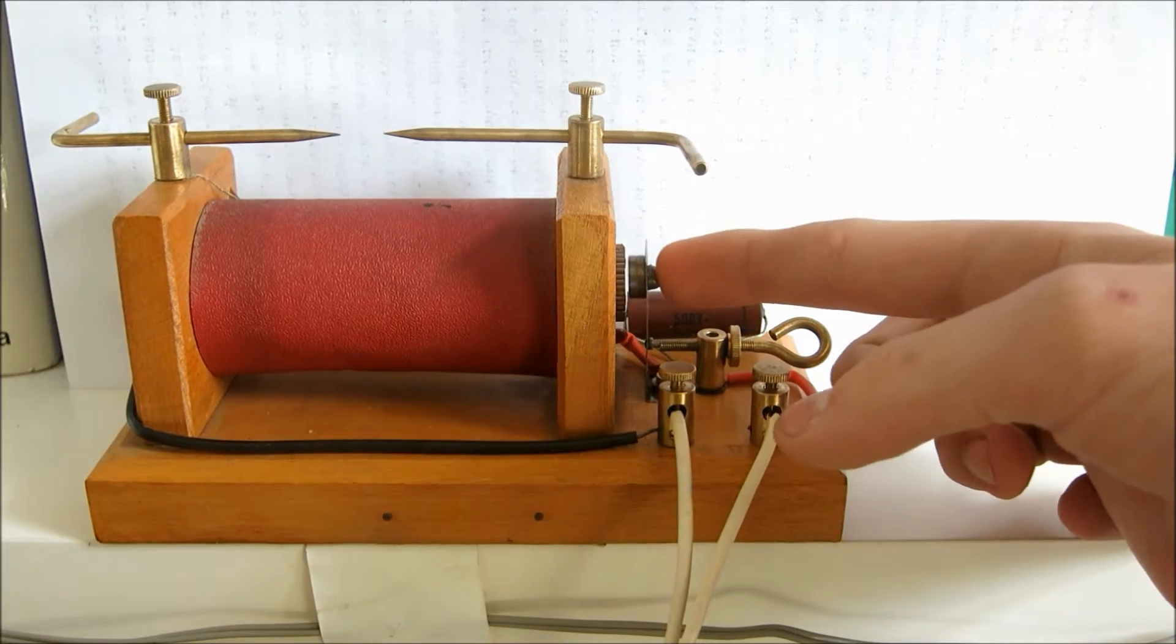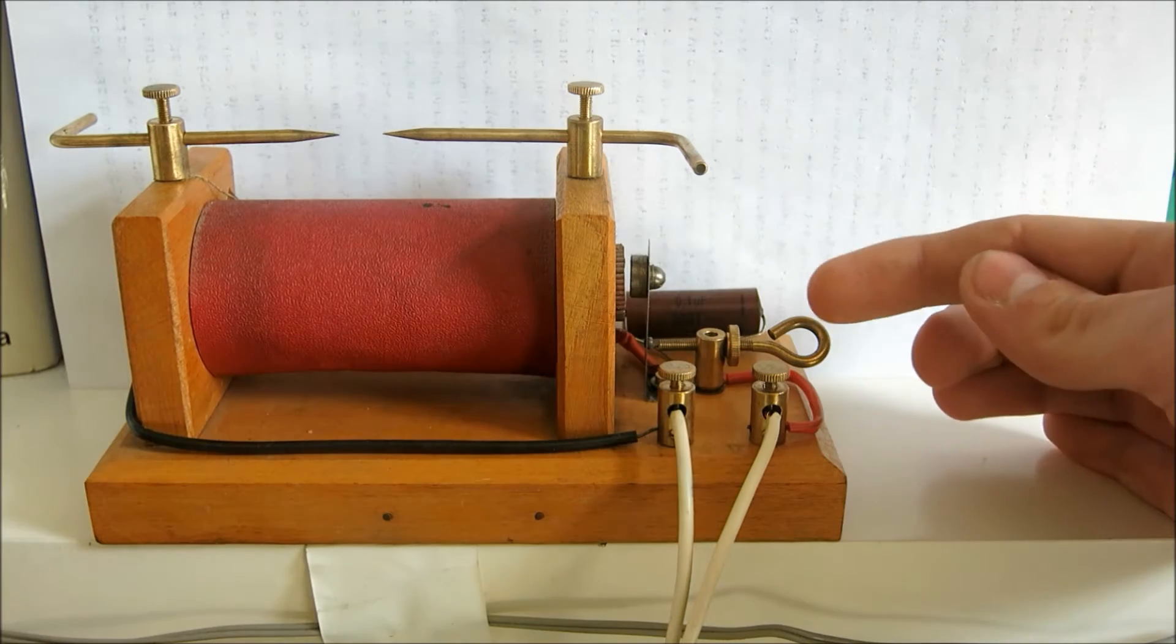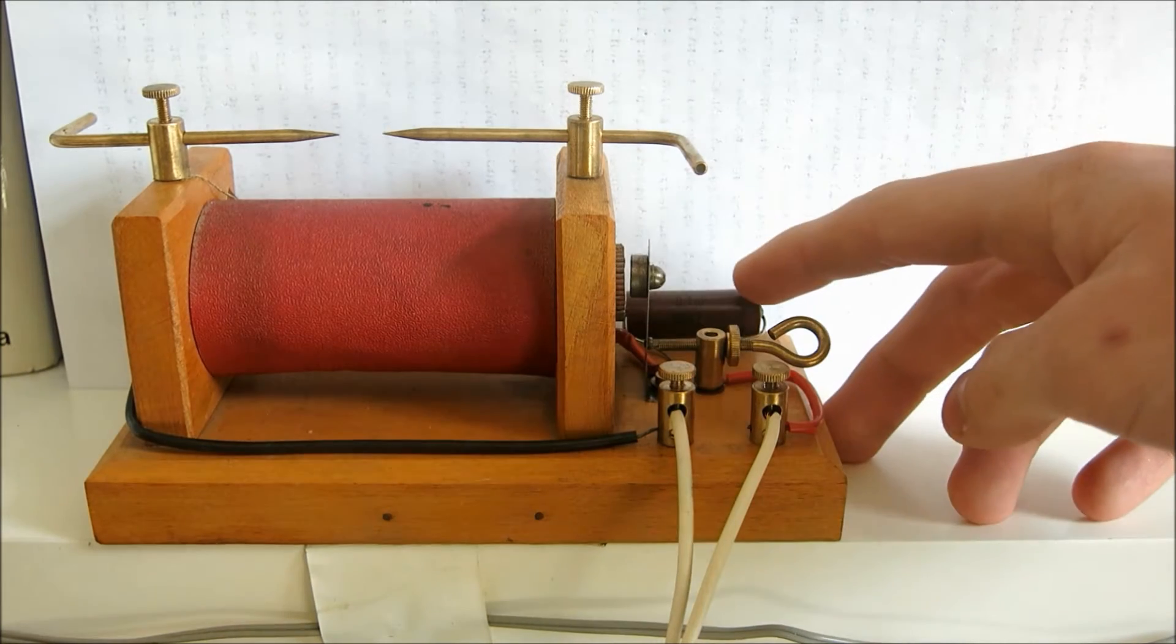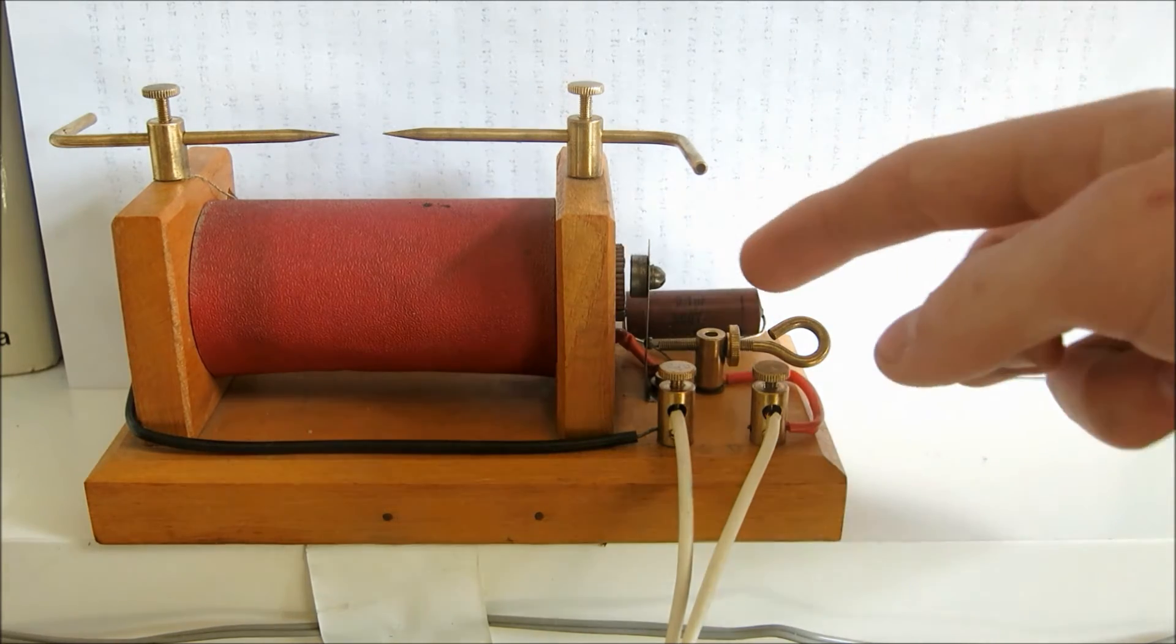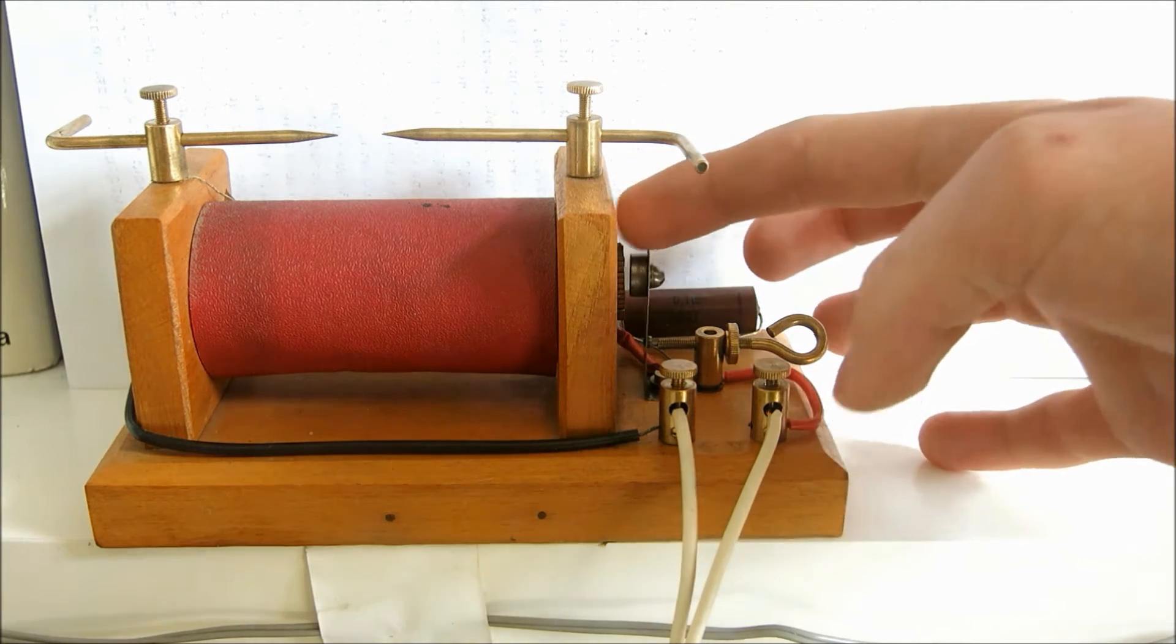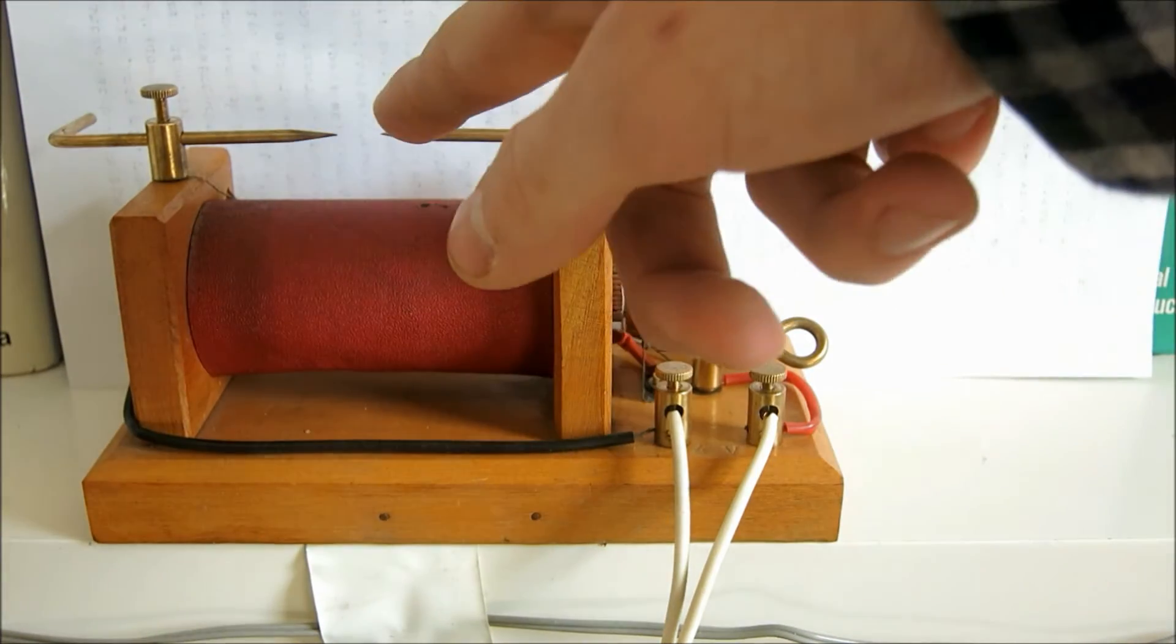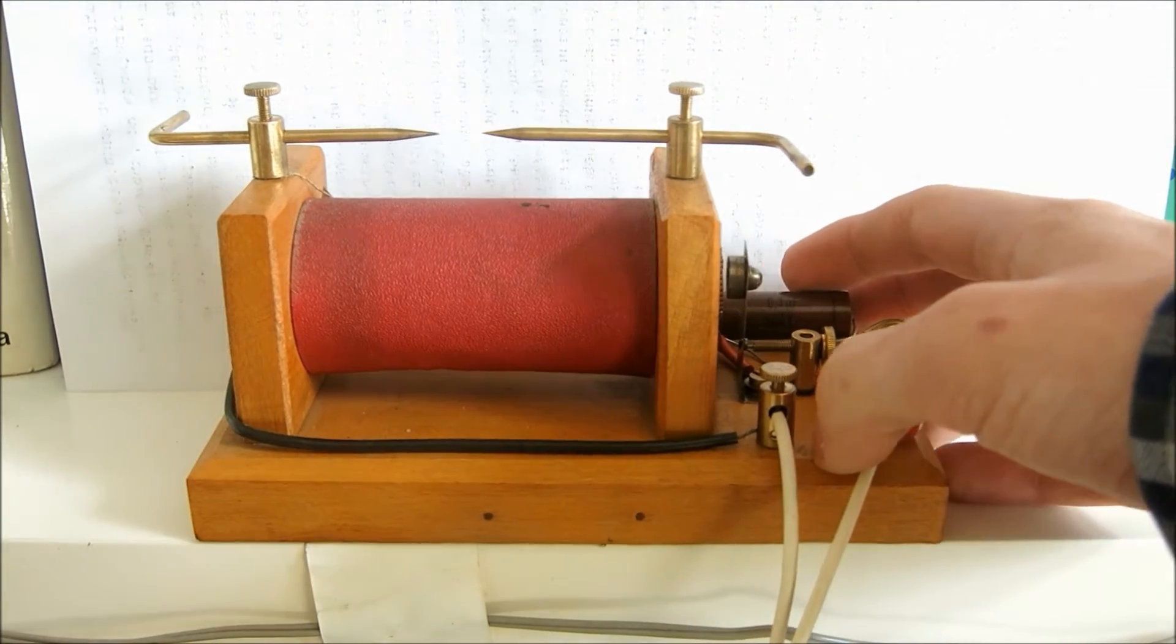It basically makes DC to AC because a transformer can only run on alternating current. So the current goes through here, is charged in this capacitor and when the charge is great enough, the hammer goes over to the other side and transfers the load to the primary coil inside this transformer and out on these contacts comes the high voltage of the secondary coil.